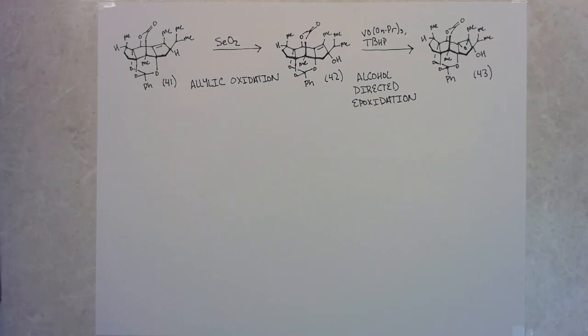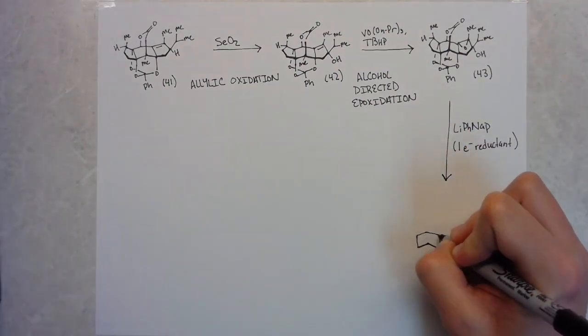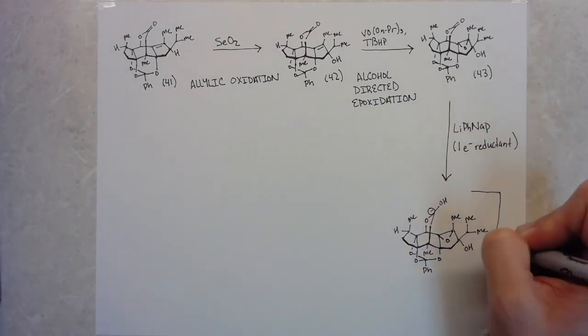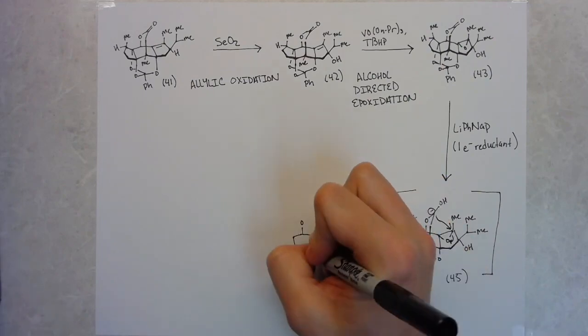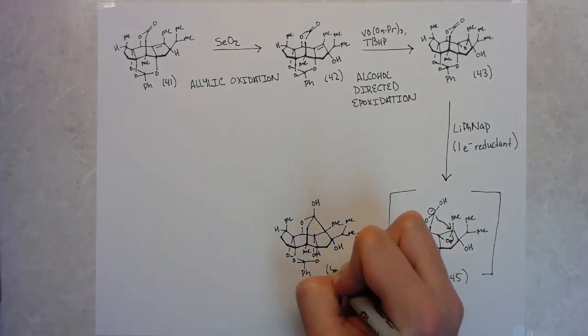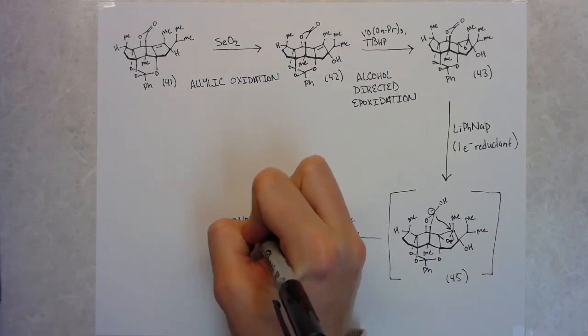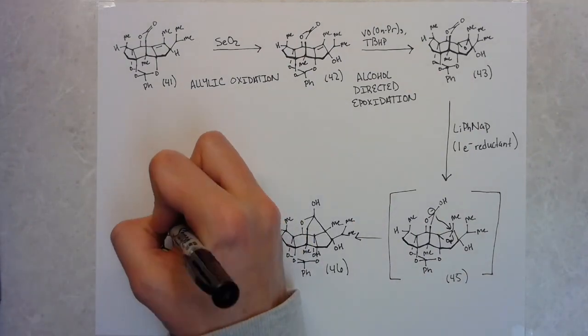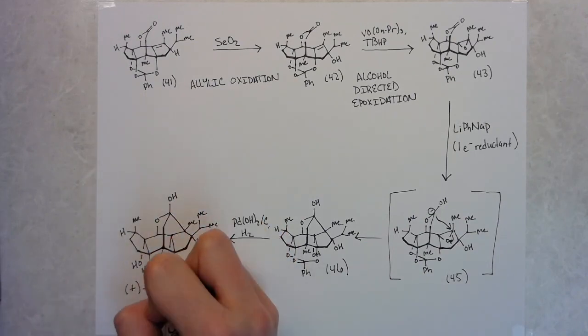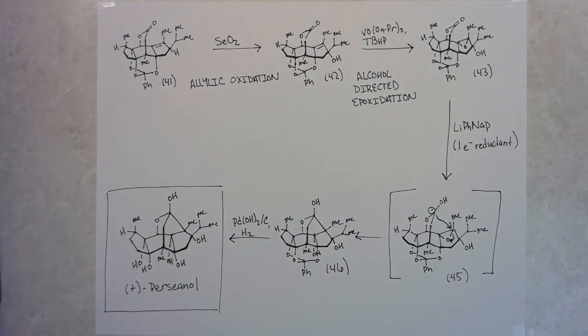To go after this, they follow the same mechanistic style that they did for both the ryanodol and ryanodine syntheses, where they want to generate an anion on the lactone structure, which will then attack the epoxide, leaving them with their core structure for persianol. They mentioned that they had to screen reducing agents to allow them to get at this anion. After this extensive optimization, they landed on lithium phenyl naphthalene. They had to use a pretty good excess and ended up with only a 25% yield for the pentacyclic core. The next step was then a palladium-on-carbon-catalyzed hydrogenation to remove the protecting group and they were left with plus persianol as the single enantiomer.